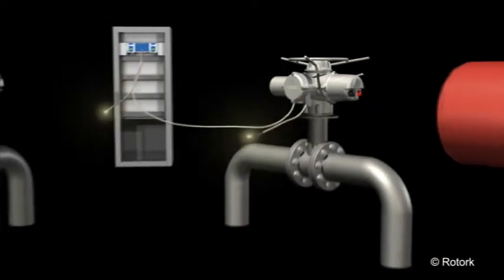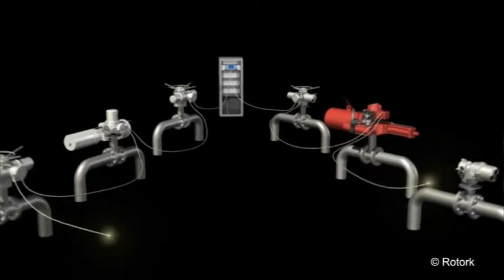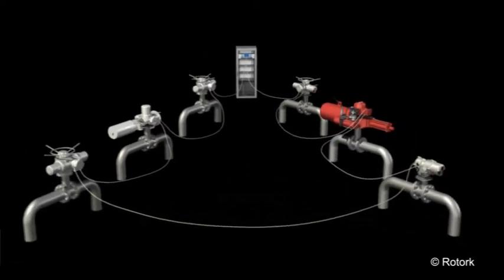Actuators in a PaxScan network are connected together using a single pair of wires to create a fault-tolerant loop capable of reaching up to 20 kilometers.